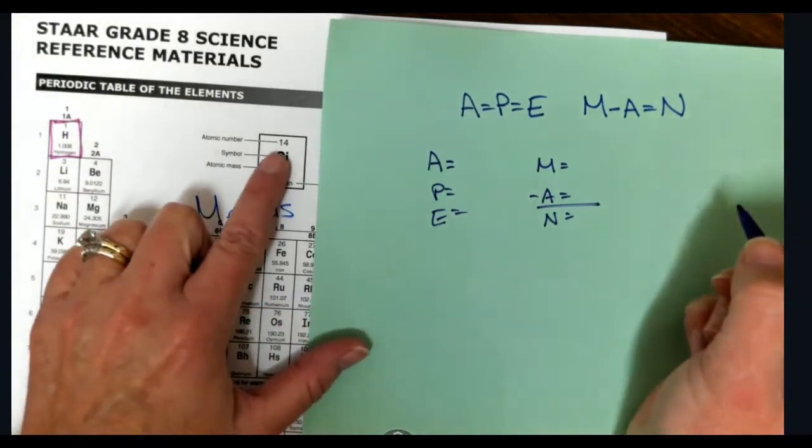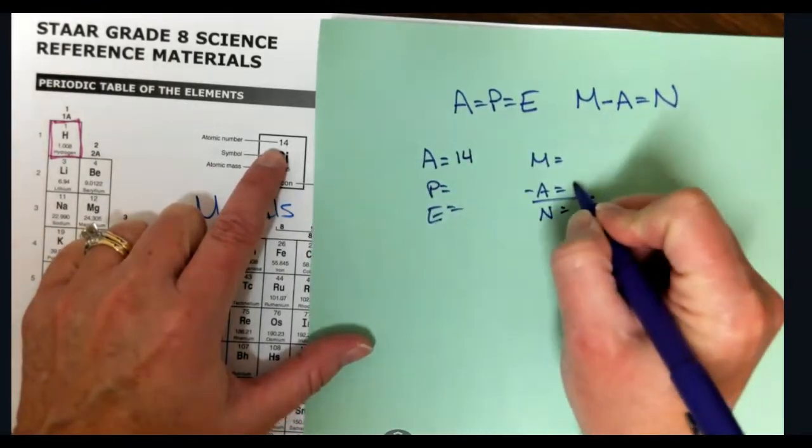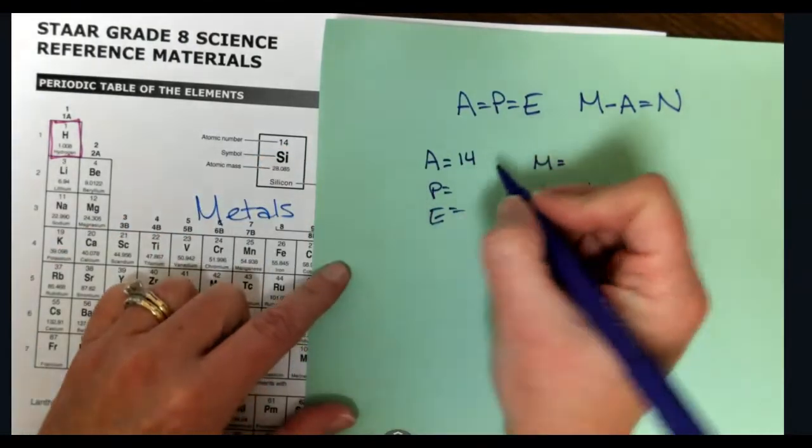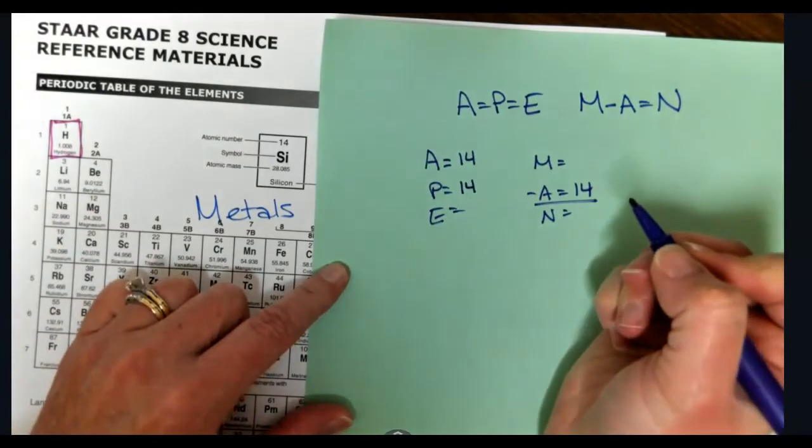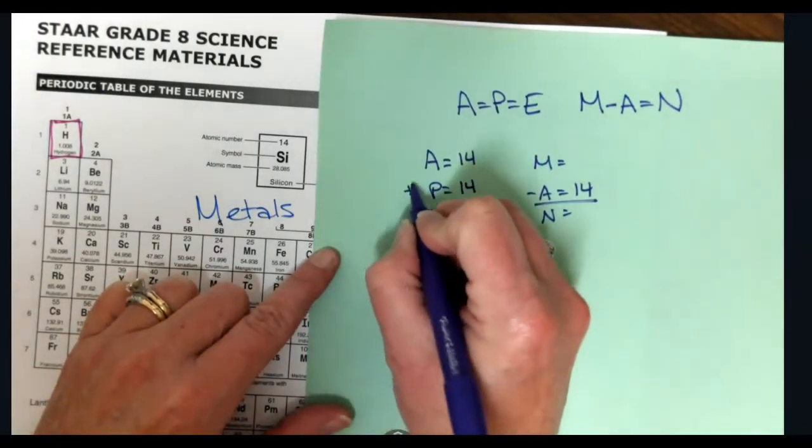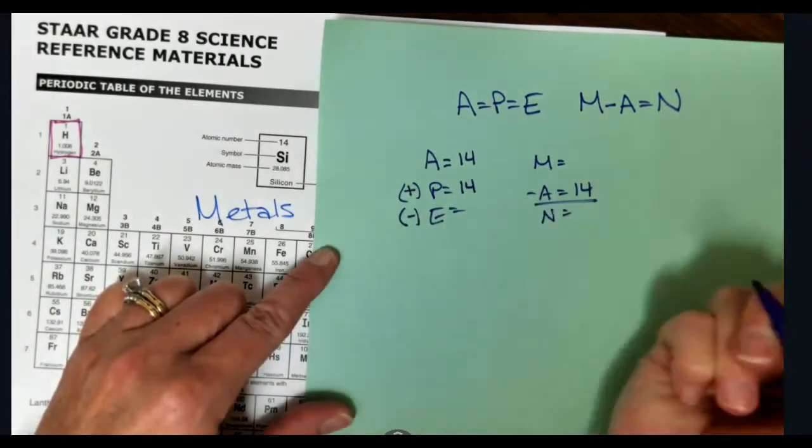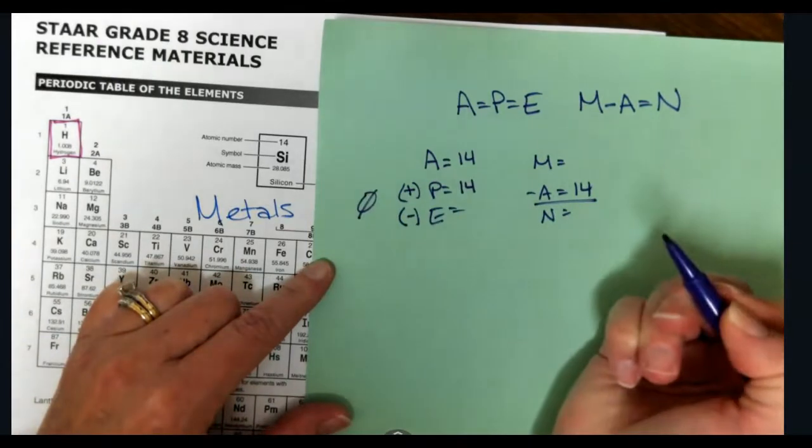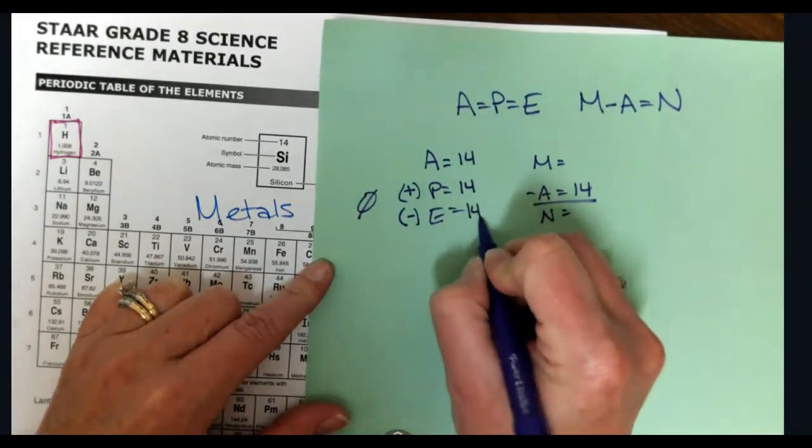So if I'm going to do silicon, my atomic number, A, is 14. So you're going to put that where the A is. We know that the atomic number is the number of protons. So we have 14 protons. I know protons have a positive charge. Electrons have a negative charge. We want our overall atom to have no charge. So we want no charge. So to cancel out my 14 positive, I also have to have 14 negative.